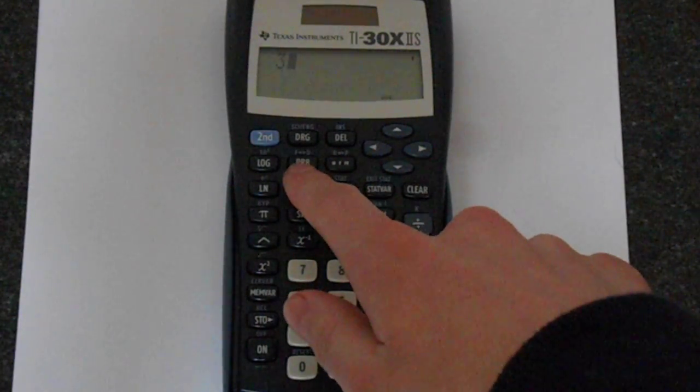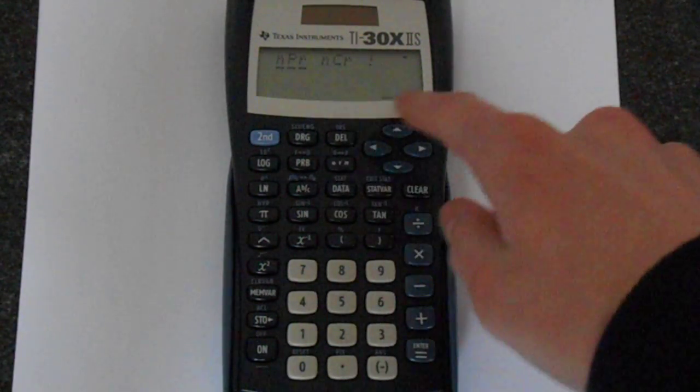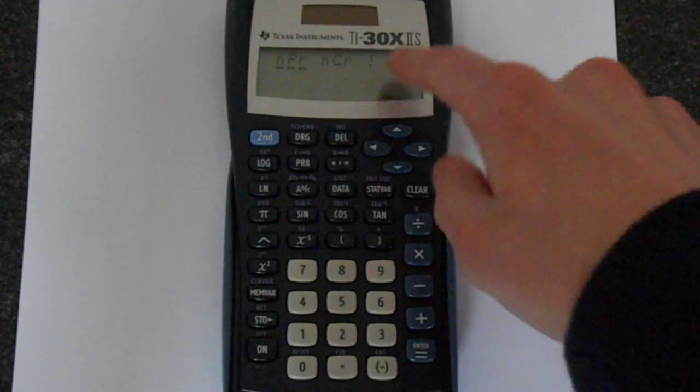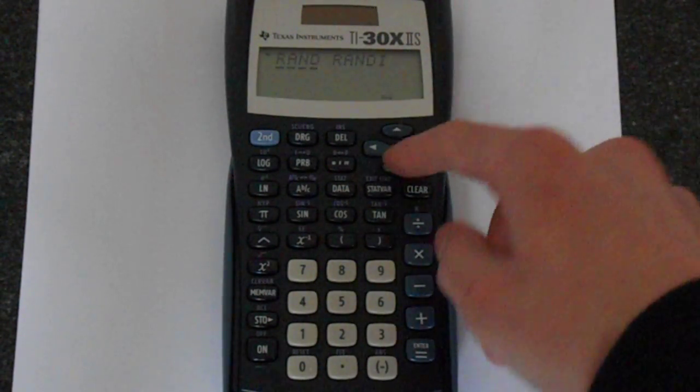Then you've got this prob button, PRB. Press that and you get into this menu. That's your permutations, combinations, and some other functions on the next bit.